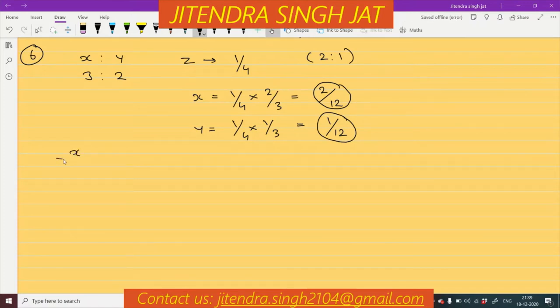X, what is X existing ratio? 3 by 5. X existing ratio is 3 by 5. How much X is sacrificing? 2 by 12 X is sacrificing. Let us come for Y. What is Y existing ratio? 2 by 5 is Y existing ratio. Minus, how much Y is sacrificing? Y is sacrificing 1 by 12. What is Z's ratio? Z's ratio is given 1 by 4. We can directly write 1 by 4.